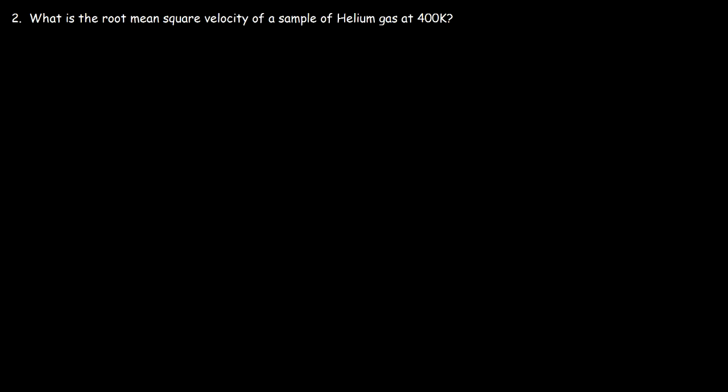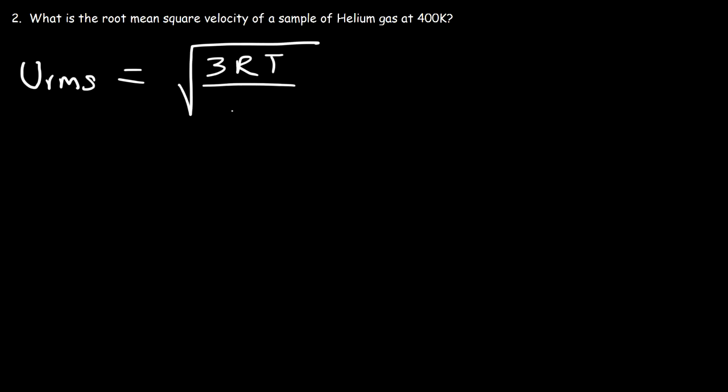Number two: what is the root mean square velocity of a sample of helium gas at 400 Kelvin? There is an equation we can use. The root mean square velocity is equal to the square root of 3RT divided by the molar mass of the substance.